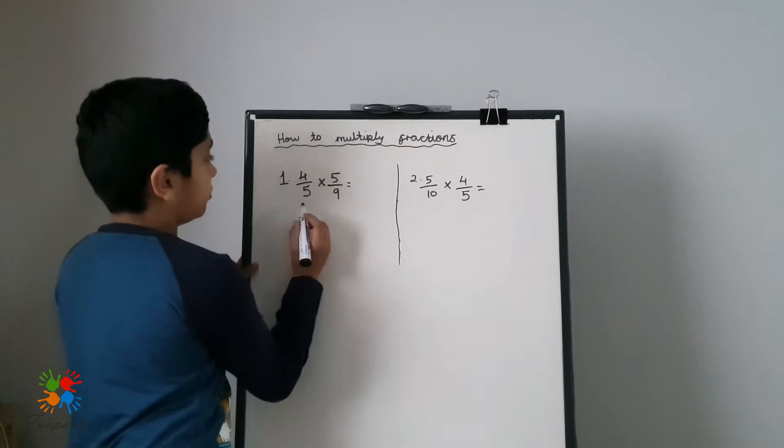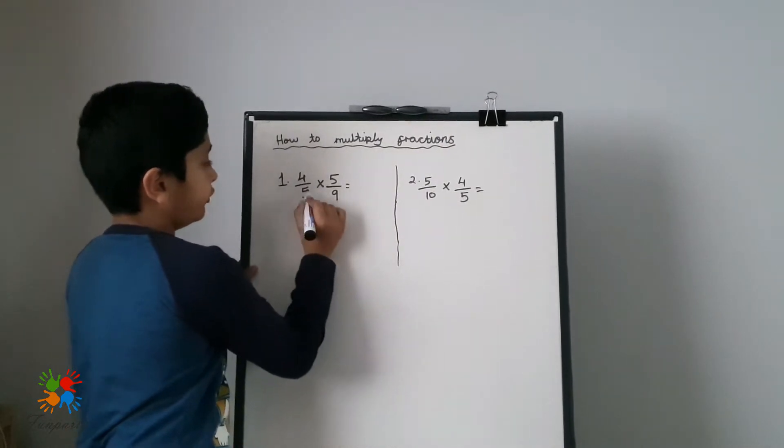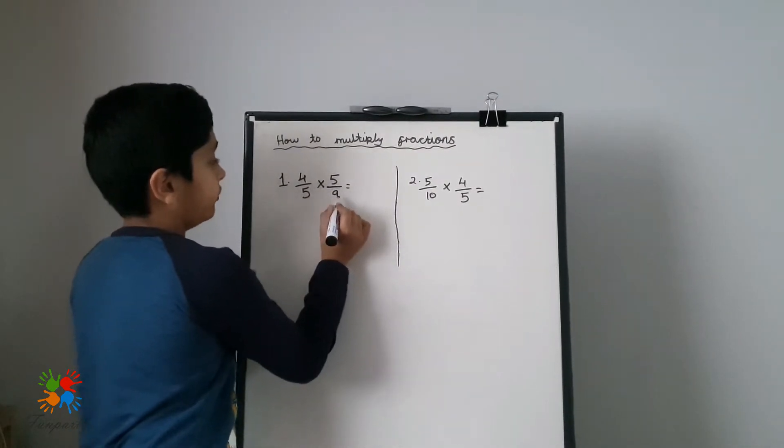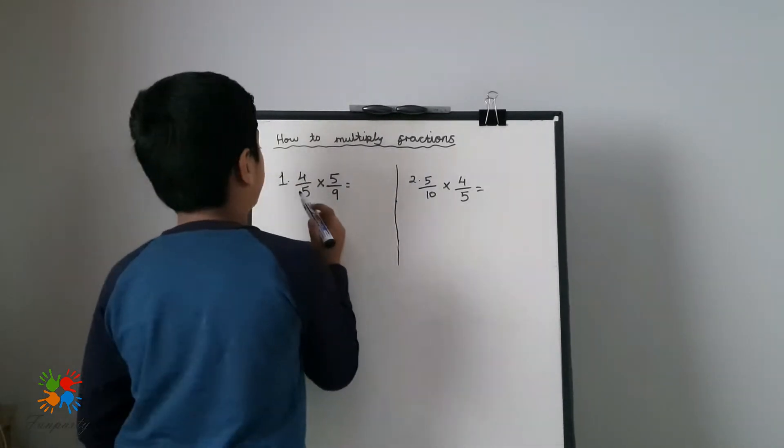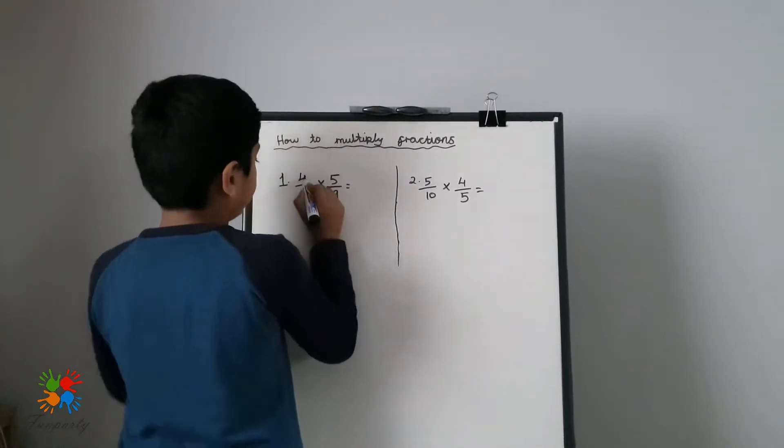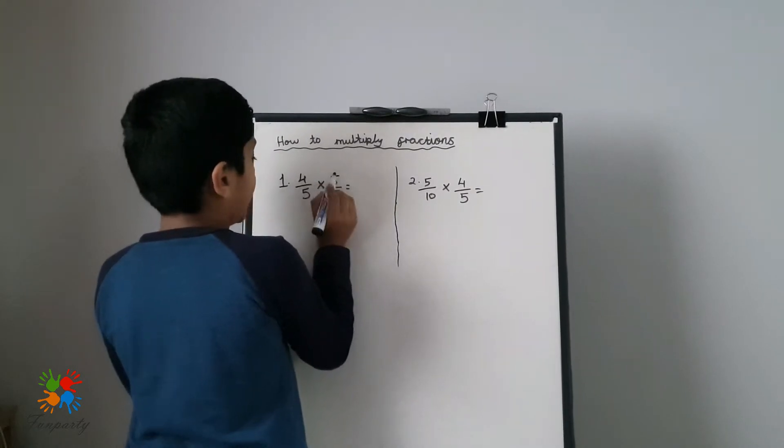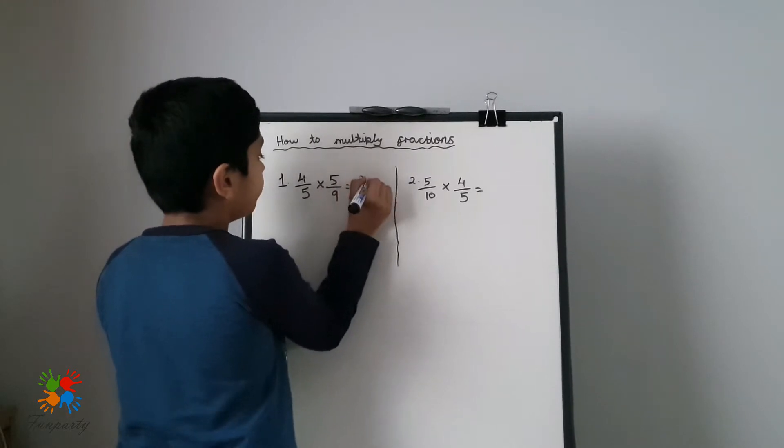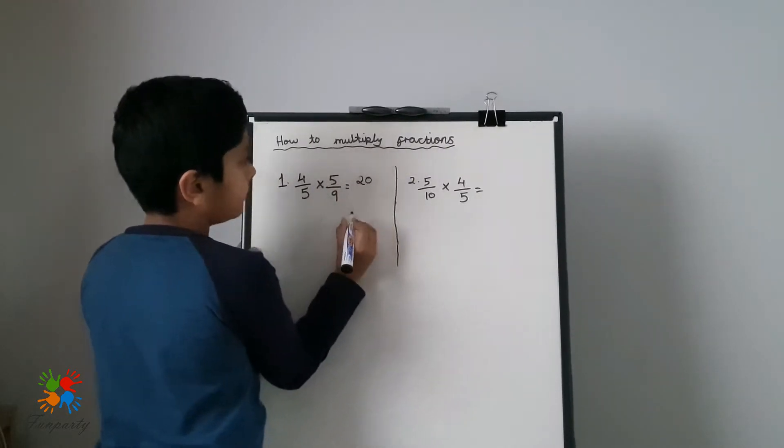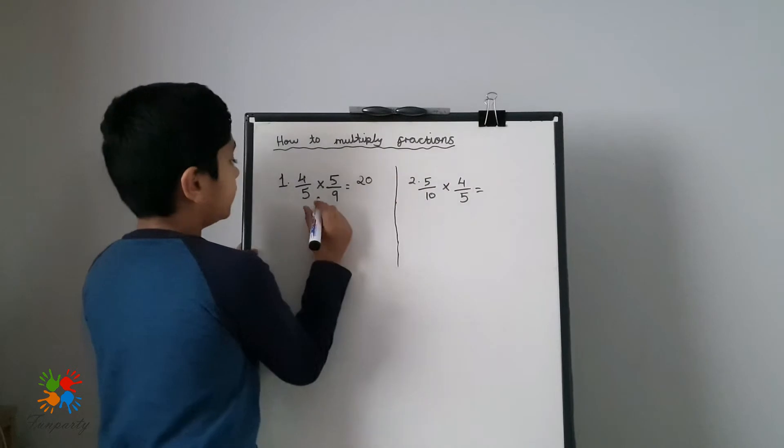Let's look at question number one: 4/5 times 5/9. To multiply it, look at the numerator first. You see 4 and 5, times them together. 4 times 5 equals 20, so put 20 over here.